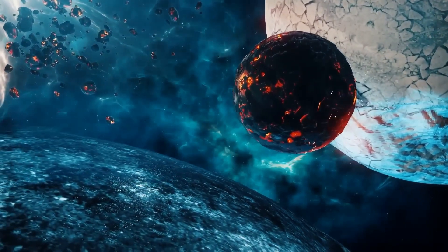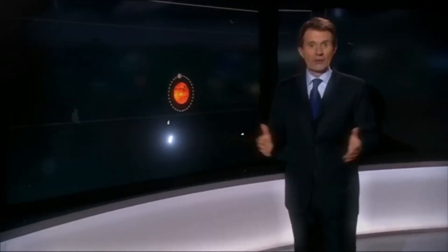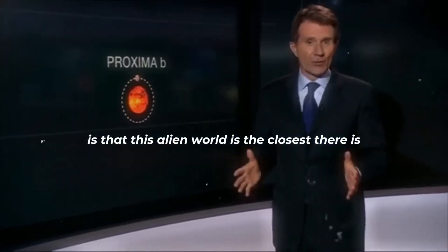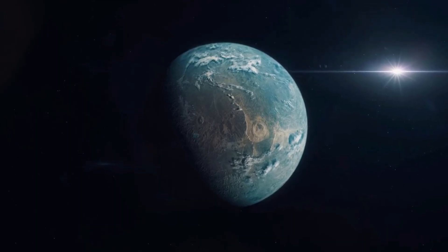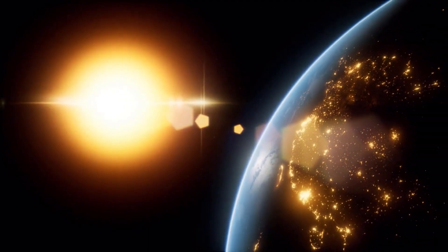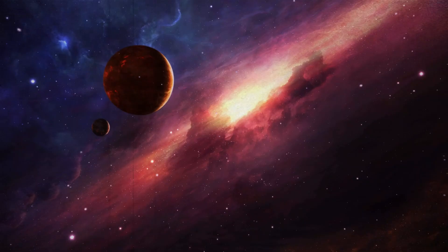Unlike Earth, Proxima B is tidally locked, meaning one side perpetually faces its star, while the other is in eternal darkness. Initially, scientists theorized that advanced life forms, if present, could have developed technologies to transfer energy between the day and night sides, perhaps using solar panels or artificial lights. It was an exciting notion until Webb's sensors began picking up some unexpected signals.